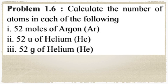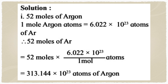Next problem: calculate the number of atoms in each of the following — (1) 52 moles of argon (Ar); (2) 52 U of helium (He); (3) 52 grams of helium (He). For the first part, one mole of any atom or molecule contains 6.022 × 10²³ atoms or molecules.